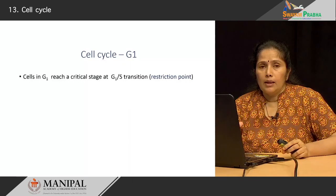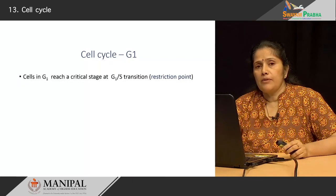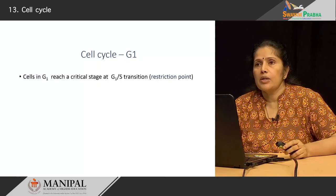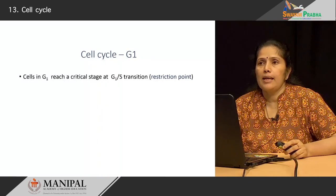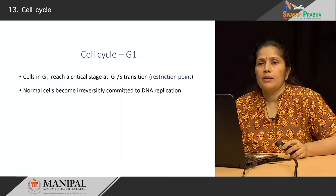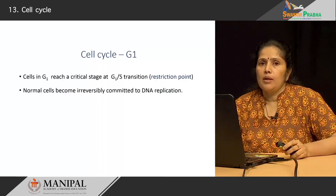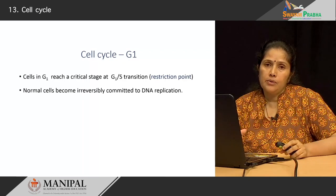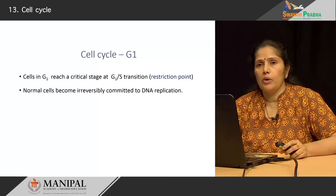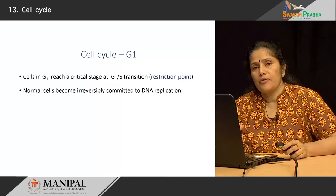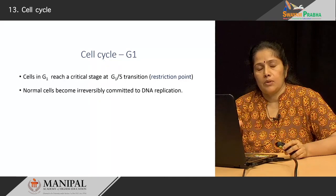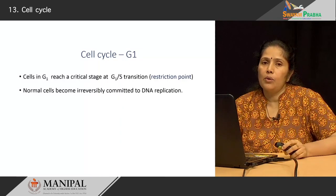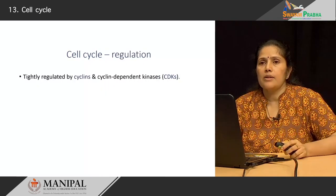As the cells are in the G1 phase they reach one critical point known as the restriction point at the G1-S transition. At this point the cell will become irreversibly committed to its DNA undergoing replication — after this there is no going back. At this point the cell has to enter the cycle and move into the next phase.